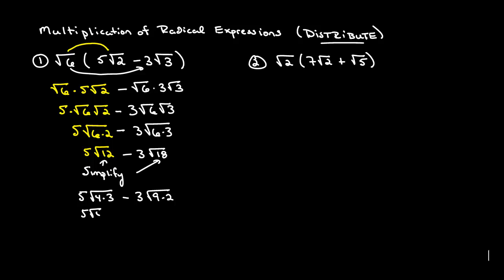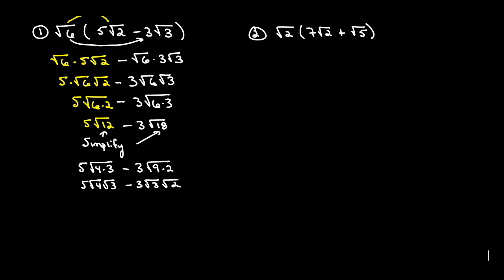So that'll give us 5 times the square root of 4 times the square root of 3 minus 3 times the square root of 9 times the square root of 2. This gives us 5 times 2 times the square root of 3, and then 3 times 3 times the square root of 2, which is 10 square root of 3 minus 9 square root of 2.